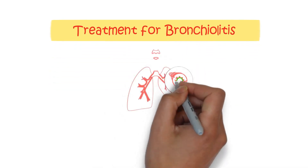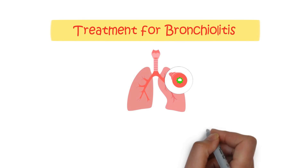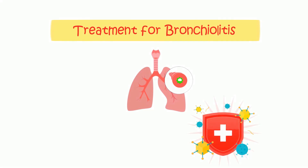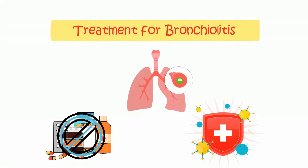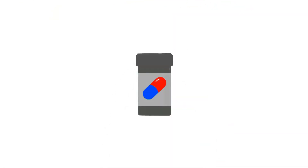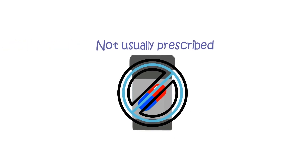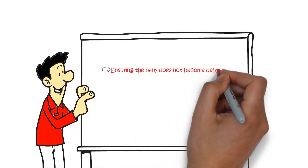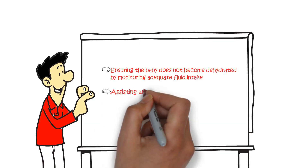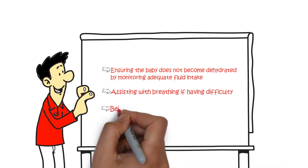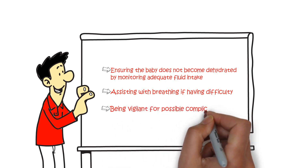Bronchiolitis is a self-limiting illness, meaning it typically resolves as the immune system clears the viral infection. There is no specific medication to directly eliminate the virus, and antibiotics, which are ineffective against viruses, are not usually prescribed. The treatment goals focus on ensuring the baby does not become dehydrated by monitoring adequate fluid intake, assisting with breathing if having difficulty, and being vigilant for possible complications.